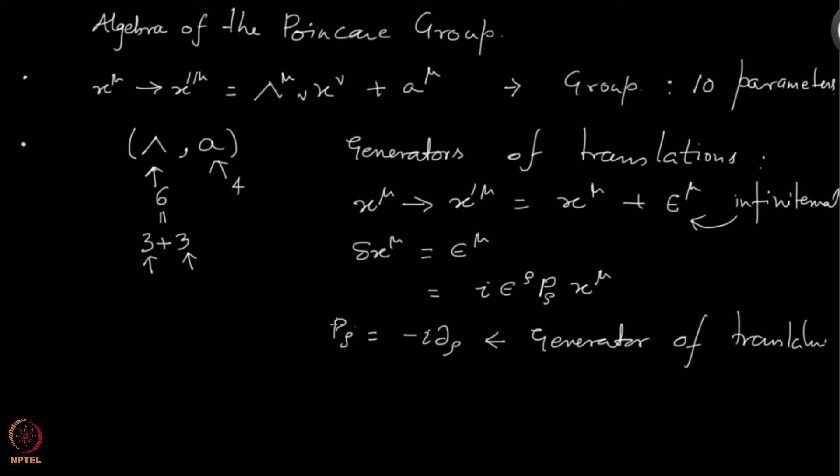It is obvious that from this expression p rho itself, it is clear that the generators will commute. If you take p mu and p nu, two operators, and take their commutator, that will vanish because the partial derivatives commute. Del mu will commute with del nu, so that is why they commute.